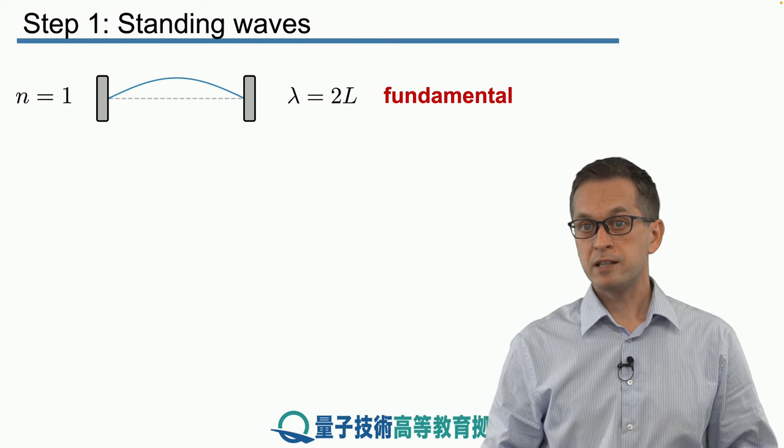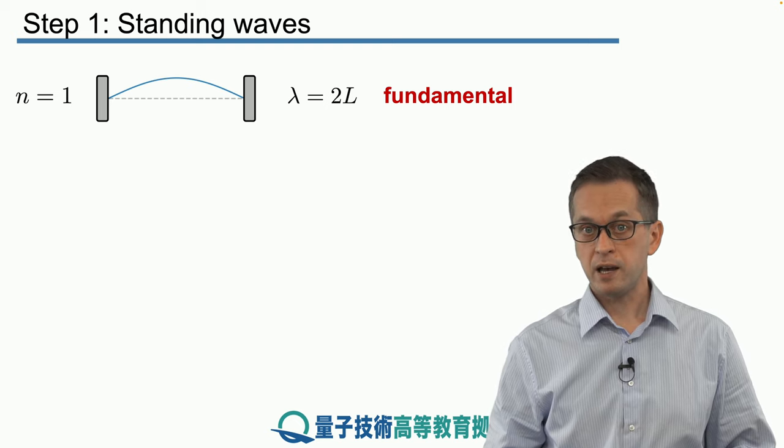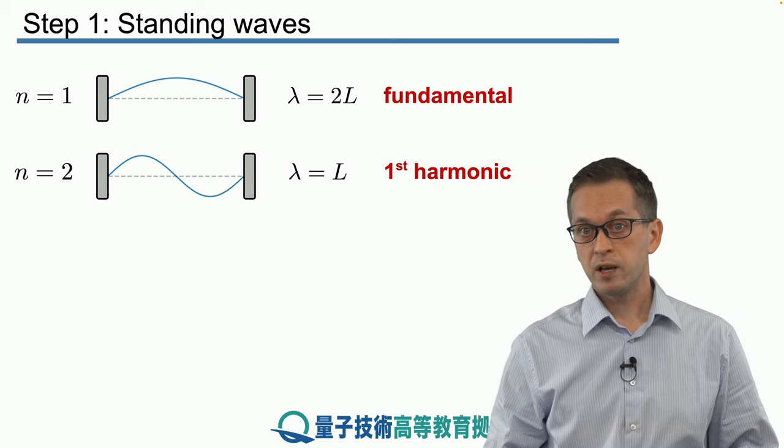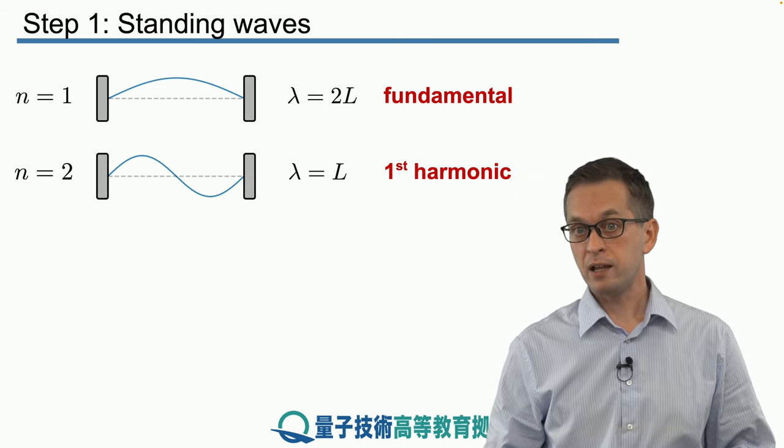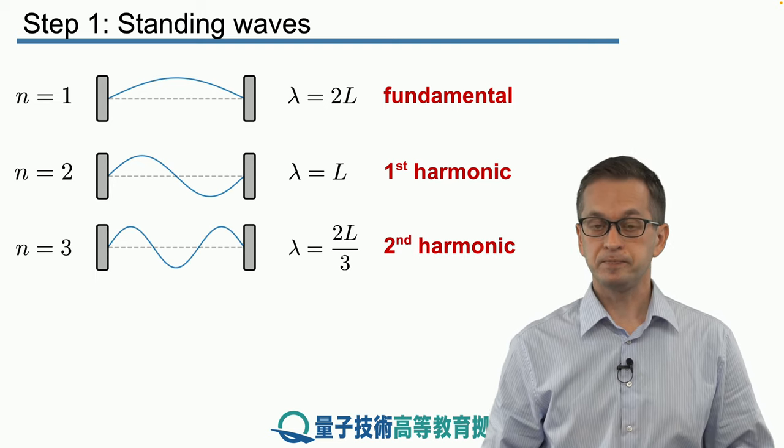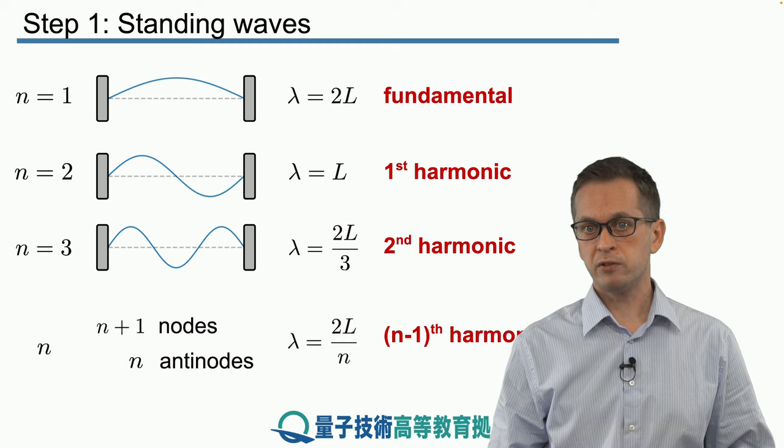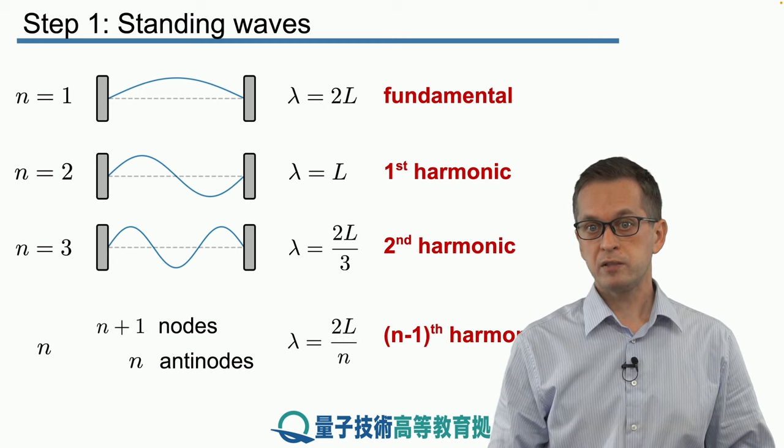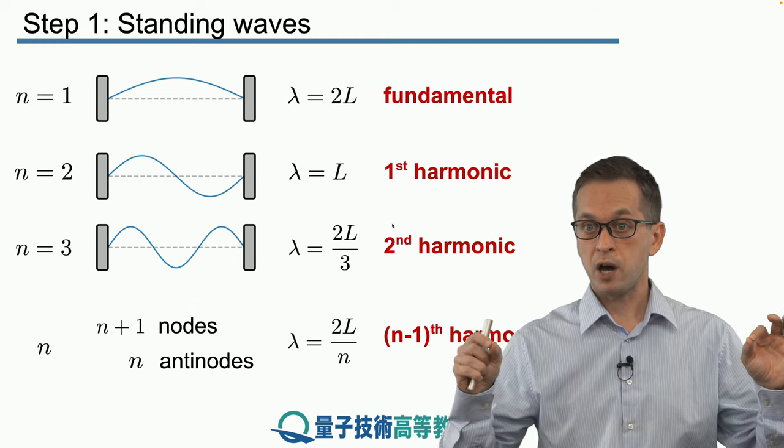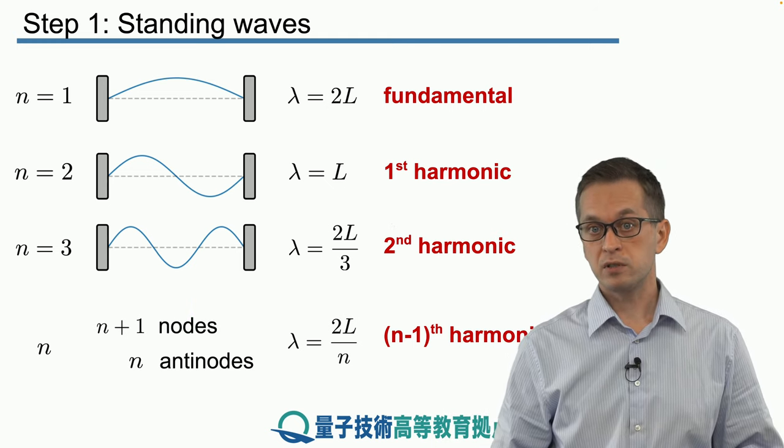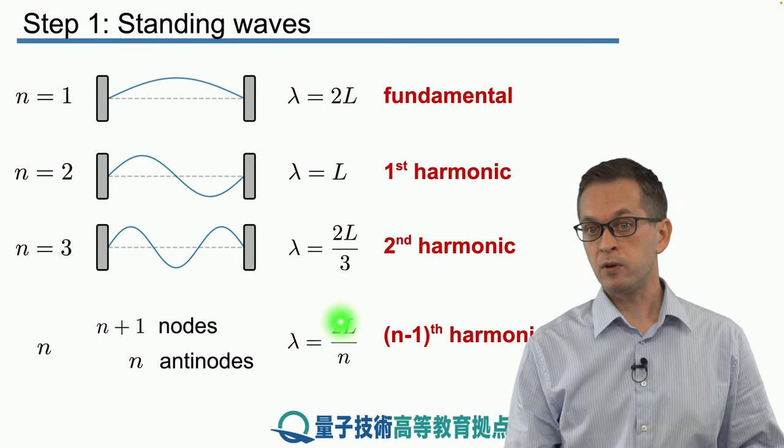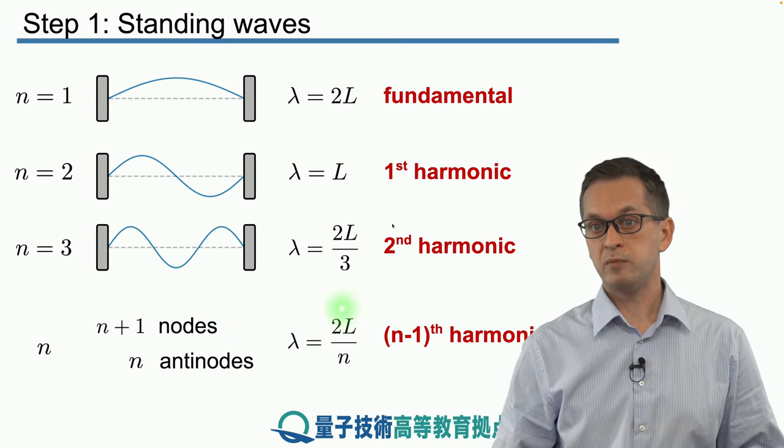We can start increasing n, for example, n is equal to 2. And then we've got the following shape. We see that lambda is now L, and this is called the first harmonic. And then we can go to higher and higher n's. We can see that for general n, we've got n plus 1 nodes. That means n plus 1 points on the string which are not moving. And we've got n anti-nodes. And for general n, as we said, our wavelength is given by 2L divided by n.